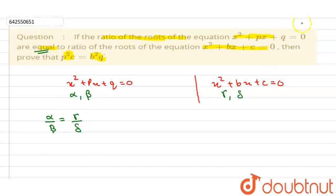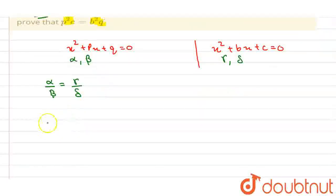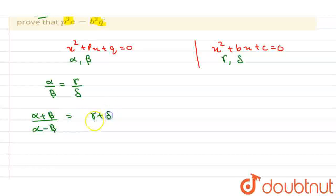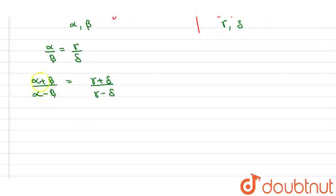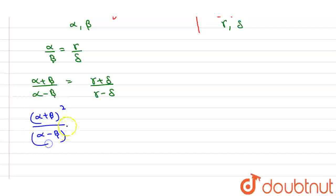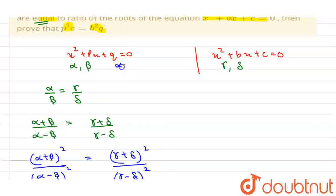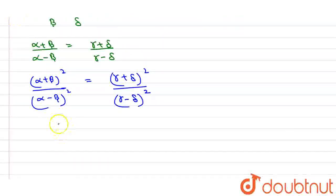Since they are equal, by componendo and dividendo we can say that (alpha + beta) divided by (alpha - beta) is equal to (gamma + delta) divided by (gamma - delta). Now we take the whole square on both sides: (alpha + beta)² divided by (alpha - beta)² equals (gamma + delta)² divided by (gamma - delta)². From Vieta's formulas: alpha + beta = -P, alpha·beta = Q, gamma + delta = -B, and gamma·delta = C.